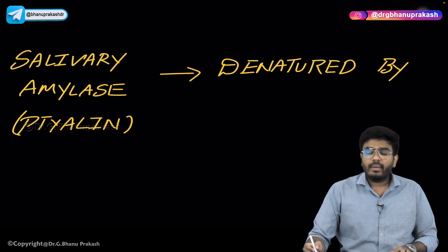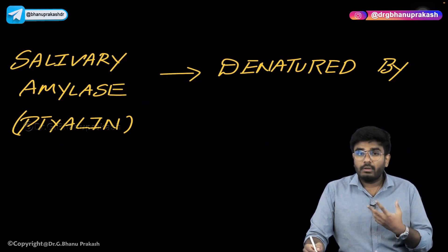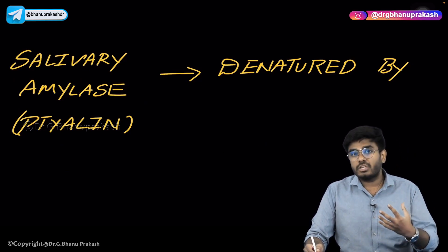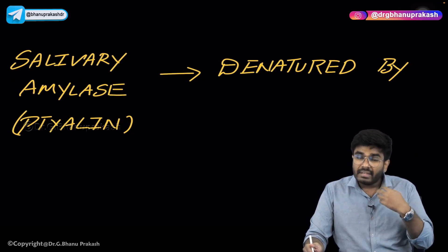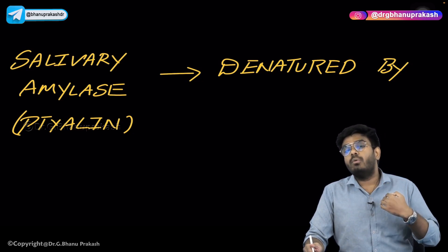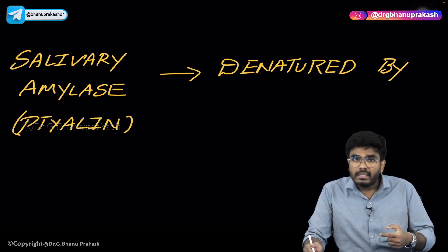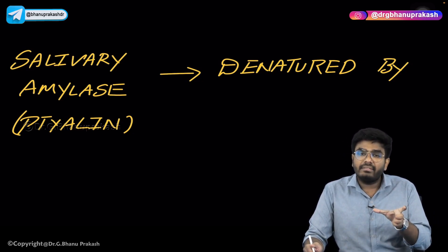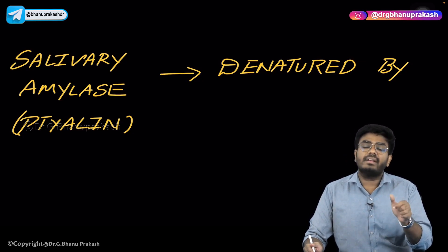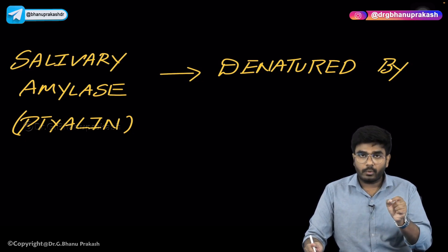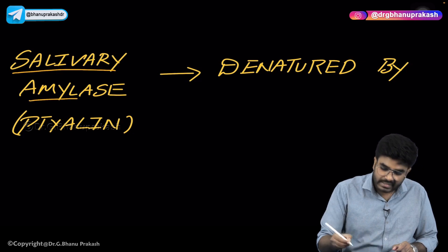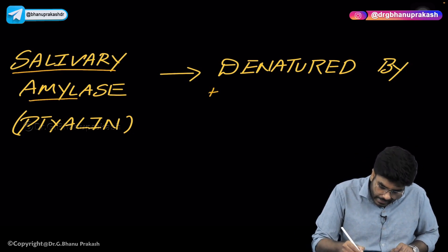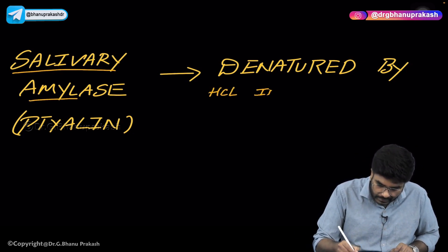Whatever salivary amylase is produced in the mouth helps in digestion of a small amount of carbohydrates. When salivary amylase travels down to the stomach, it is inactivated by the acid present in the stomach. This was an important previously asked question: salivary amylase is denatured by acid in the stomach.